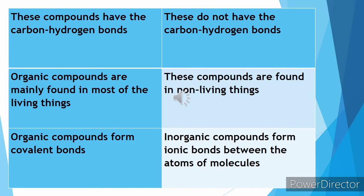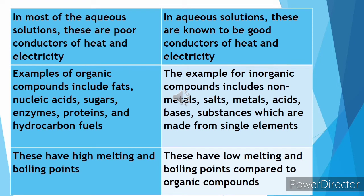Organic compounds have carbon-hydrogen bonds, while inorganic compounds do not. Organic compounds are mainly found in living things, while inorganic compounds are found in non-living things. Organic compounds form covalent bonds, while inorganic compounds form ionic bonds. In aqueous solutions, organic compounds are poor conductors of heat and electricity, while inorganic compounds are good conductors of heat and electricity.